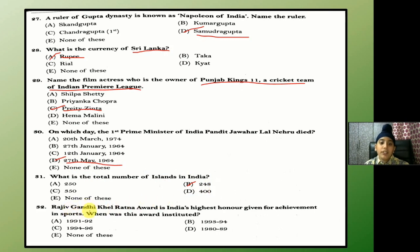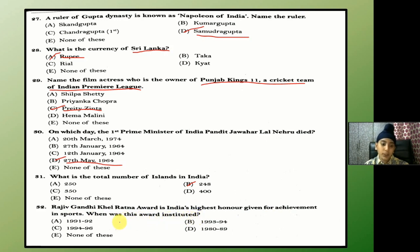Rajiv Gandhi Khel Ratna Award is the highest Indian honor given for achievement in sports. When was this award instituted? The answer is A — 1991–1992.